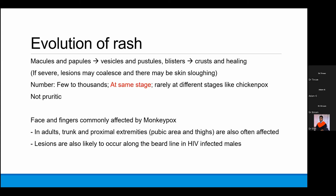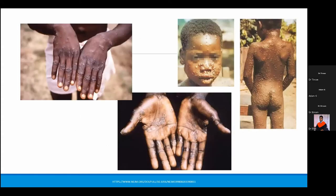In adults, you can also get involvement of the trunk, as well as the genitalia. In HIV-infected males, lesions can also occur along the beard line. These are typical rashes — especially at the early stage, you can see maculopapular and slightly nodular lesions on the face, involving the palms and soles, later progressing to the rest of the body.